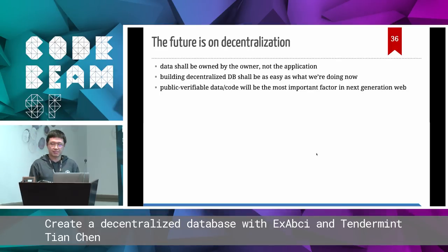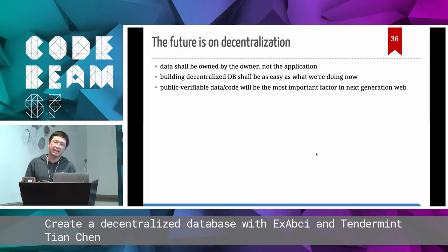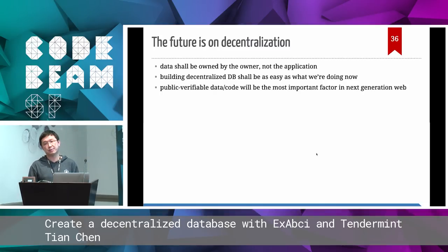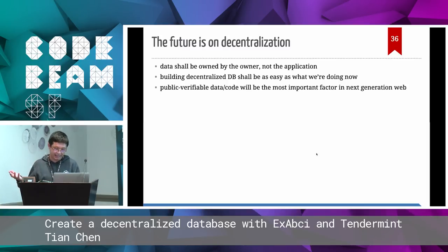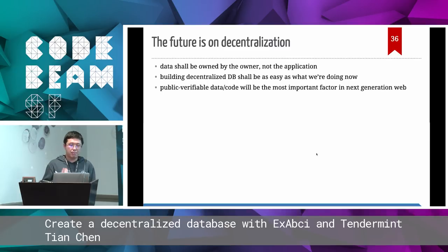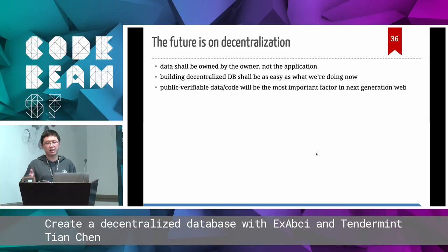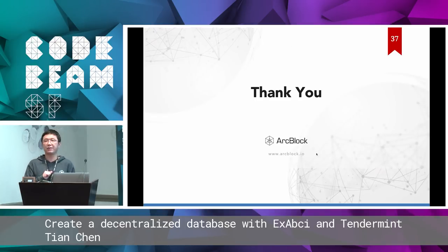In summary, the future is decentralization. Data shall be owned by the owner, not by the application — applications might die, but the data should stay there forever. Building a decentralized database shall be as easy as what we do now with Postgres. Public verifiable data and code will be the most important factor in the next generation web. Thank you.